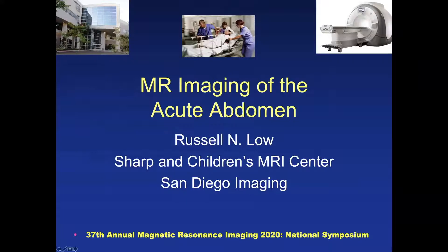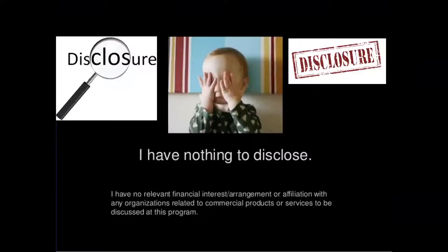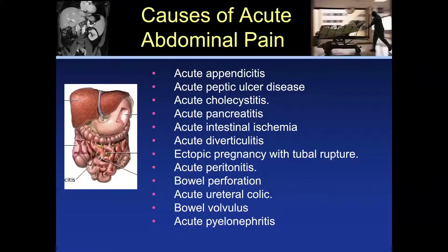These are patients who present from the emergency room, and there are indeed a whole host of potential etiologies of abdominal pain, including acute appendicitis, acute peptic ulcer disease, cholecystitis, pancreatitis, intestinal ischemia, diverticulitis, ectopic pregnancy, acute peritonitis, bowel perforation, urethral colic, bowel volvulus, and acute pyelonephritis. And in truth, this list could be three to four times longer.